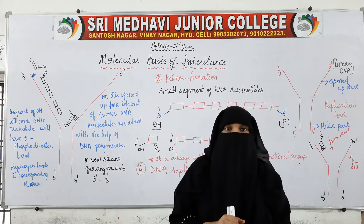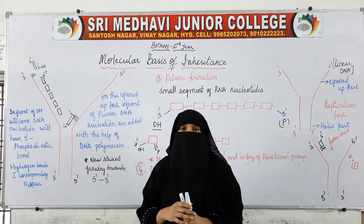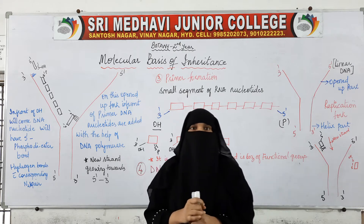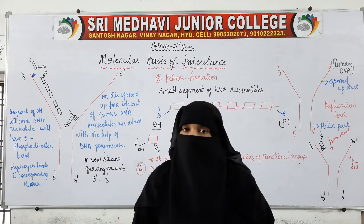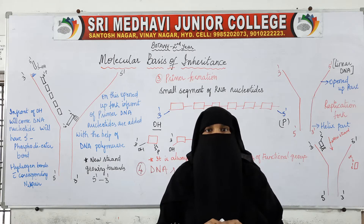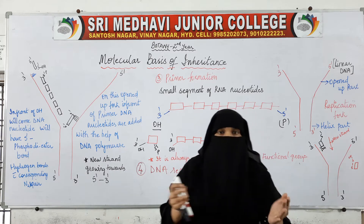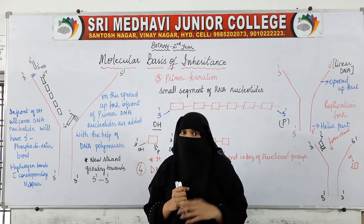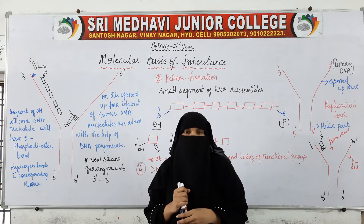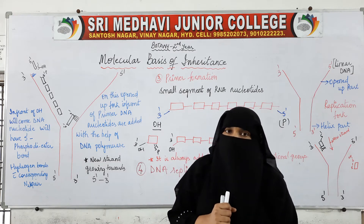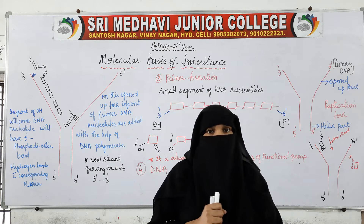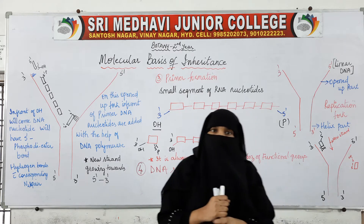Welcome everyone. We are discussing the replication process of DNA. We have seen the first two steps: the activation of nucleotides, and the opening of the DNA helix. In activation of nucleotides, phosphorylase is the enzyme which helps in activation of nucleotides. In the second step, opening of the DNA helix, two enzymes are involved - helicase is the first enzyme.